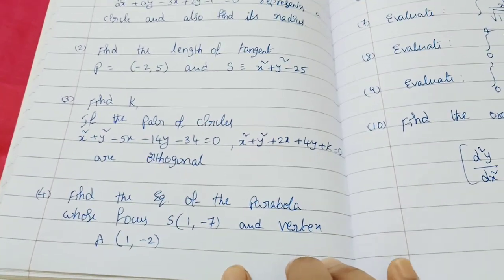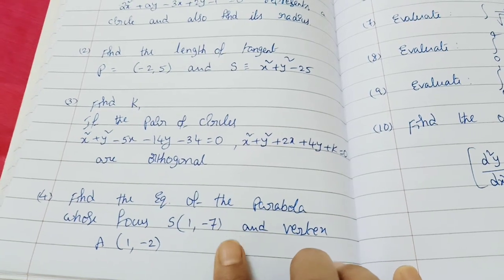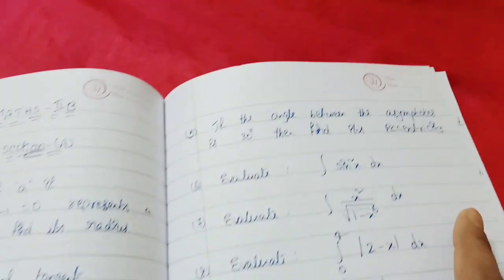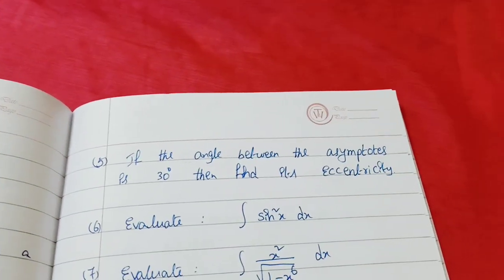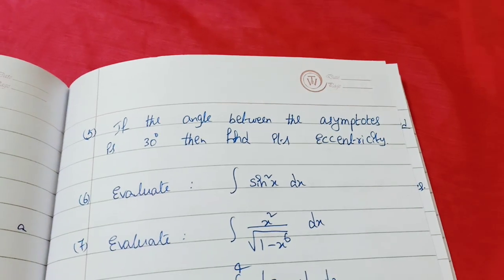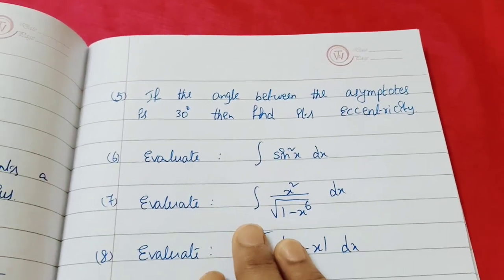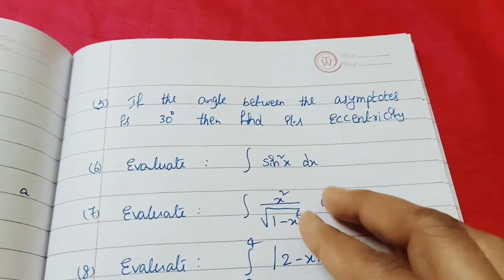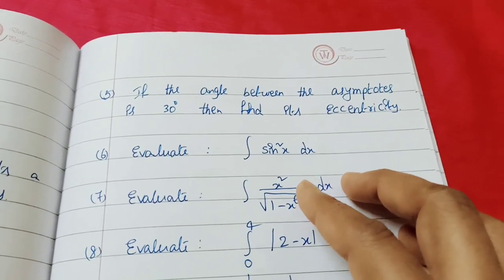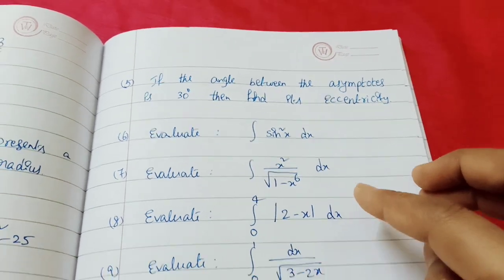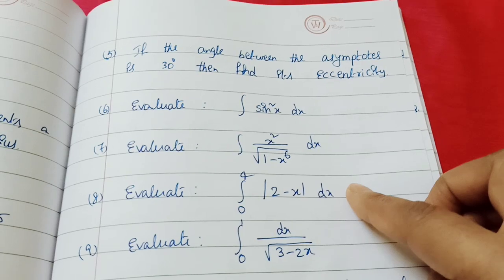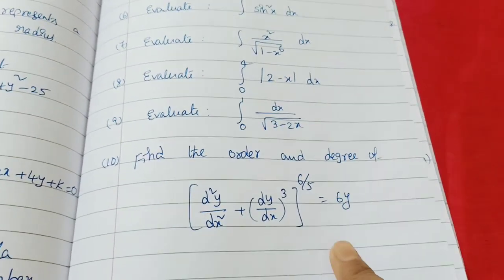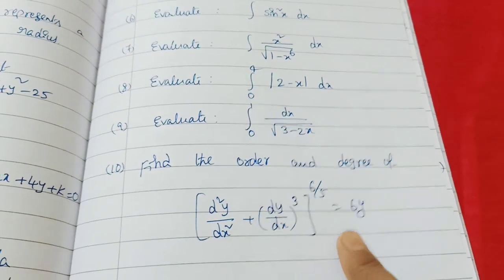Fourth question: parabola - the focus and vertex are shared in the parabola. Fifth question: hyperbola - 30 degrees is given, find its eccentricity. Sixth question: evaluate the integration - this is a very important part. The integration section has different types of integration problems.